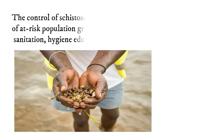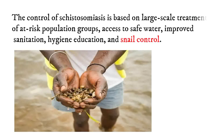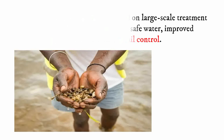Prevention and control. The control of schistosomiasis is based on large-scale treatment of at-risk population groups, access to safe water, improved sanitation, hygiene education, and snail control.